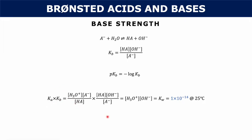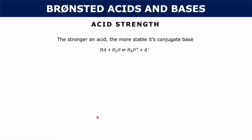That's how you quantify acid and base strength numerically. Now let's talk about it qualitatively. The essential idea behind acid strength is that the stronger an acid, the more stable its conjugate base. So if your A- is really stable — not very reactive, wants to stay in that state — then it came from a strong acid. There are three factors that play into the stability of a conjugate base. The first is electronegativity.